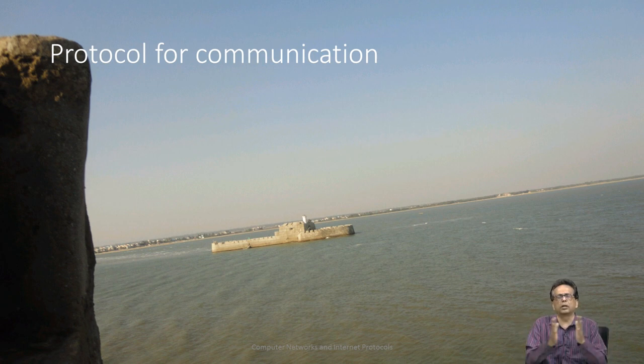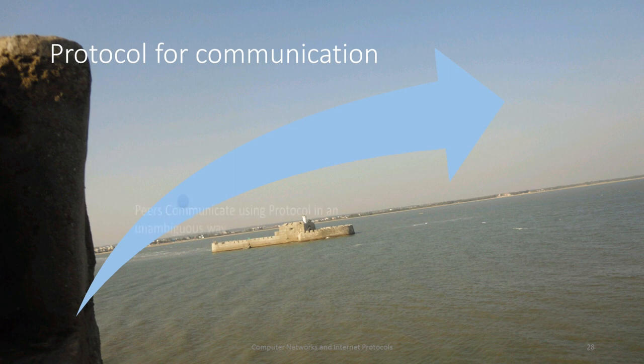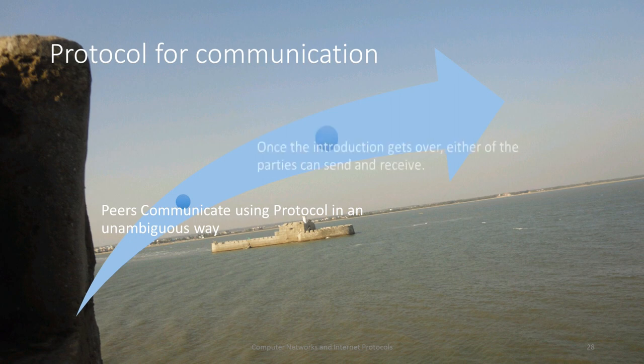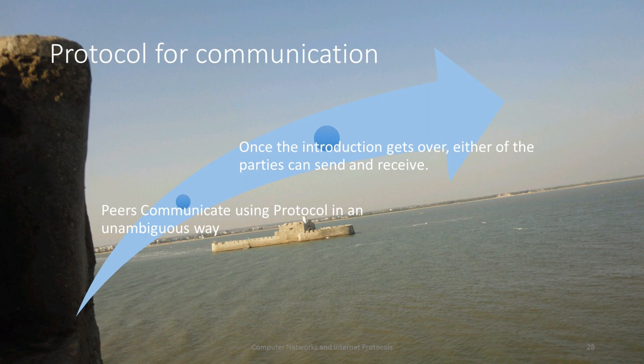How exactly do these peers communicate? For every peer to communicate, there is a mechanism and that mechanism is known as a protocol — whether it is Ethernet card to Ethernet card, IP to IP, or TCP to TCP. Protocols enable peer-to-peer communication. First, peers communicate using a protocol in an unambiguous way — the commands are very precise and there is no way the receiver misunderstands what the sender wants. The protocol normally starts with an introduction; once that is over, one is the initiator and one is the responder, but after that both can send and receive.